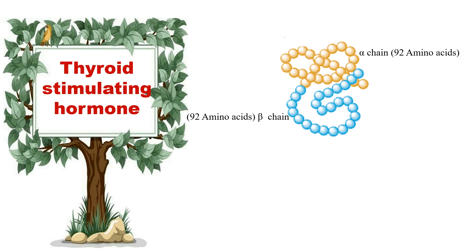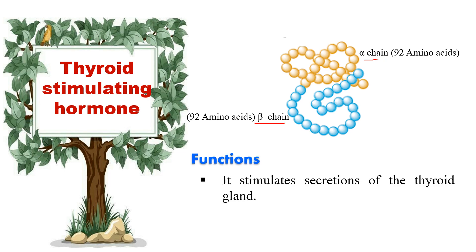Next hormone is TSH — thyroid stimulating hormone. It is a glycoprotein hormone produced by the thyrotroph cells in the anterior lobe of the pituitary. This hormone consists of 2 chains: an alpha chain and a beta chain. The alpha chain consists of 92 amino acids, while the beta chain, which is unique to TSH, has 118 amino acids. Receptor specificity is decided by the beta subunit. This hormone stimulates the secretion of the thyroid gland and also removes iodide from the body.